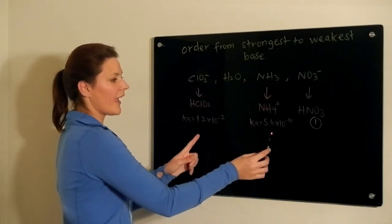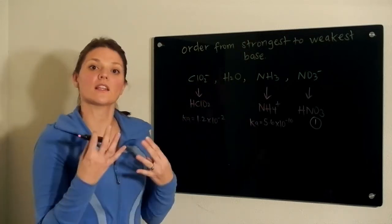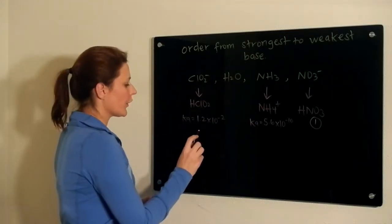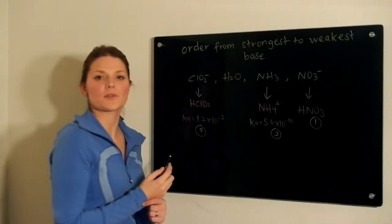Looking at the Ka values, this number is significantly larger, which means it would be a significantly stronger acid. So we're going to give that position 2. This here would then be the weakest acid of the options we have.